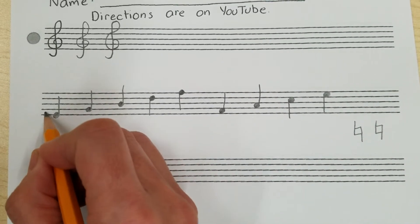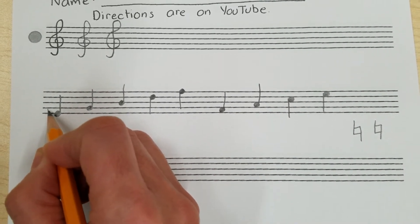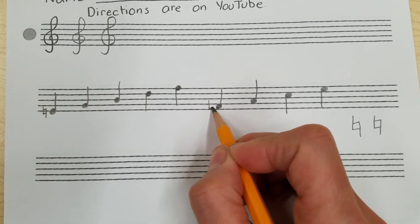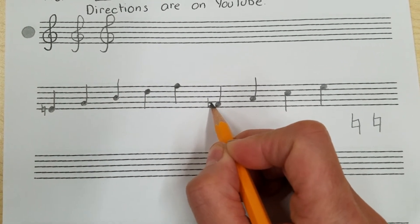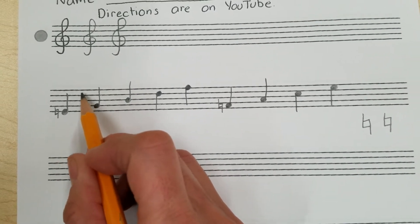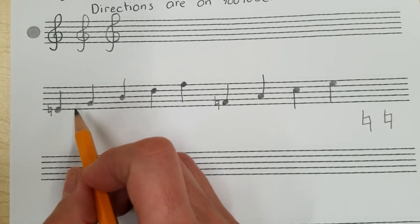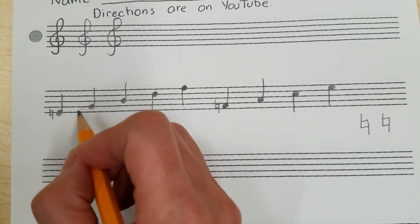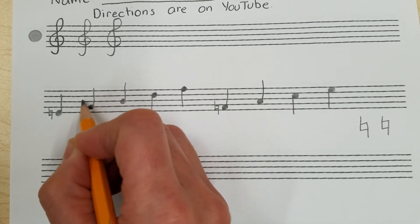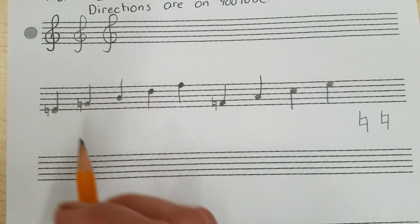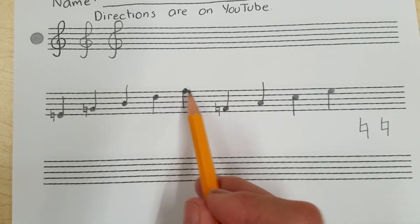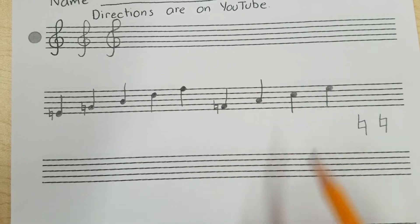That natural sign should go around the same line or the same space as your note. I don't want to see the note is here on G and then your natural sign is floating someplace else — that's actually incorrect. The natural sign would go around the G line the same way the note is on the G line. Go ahead and put a natural sign before the remaining quarter notes that we wrote.